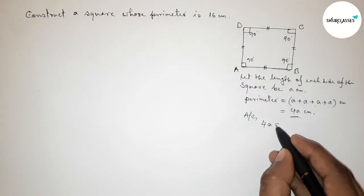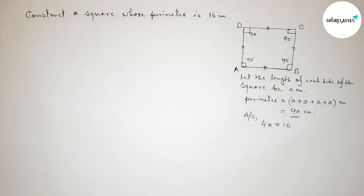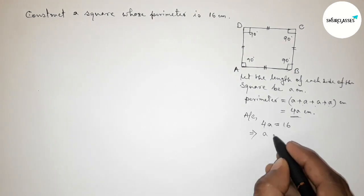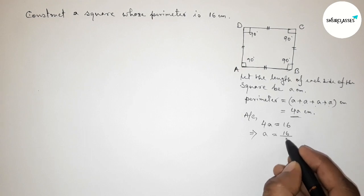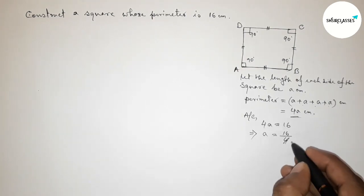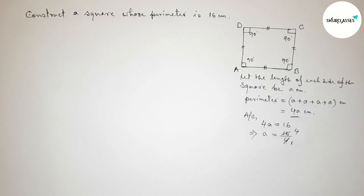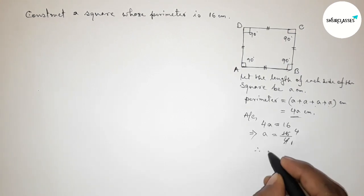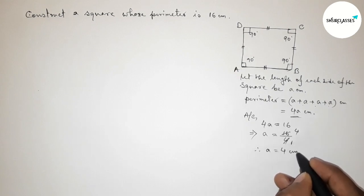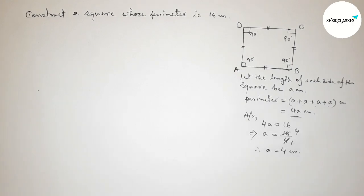According to the condition, this perimeter must equal 16, so 4a = 16. Simplifying: a = 16 ÷ 4. Therefore a = 4 centimeters.